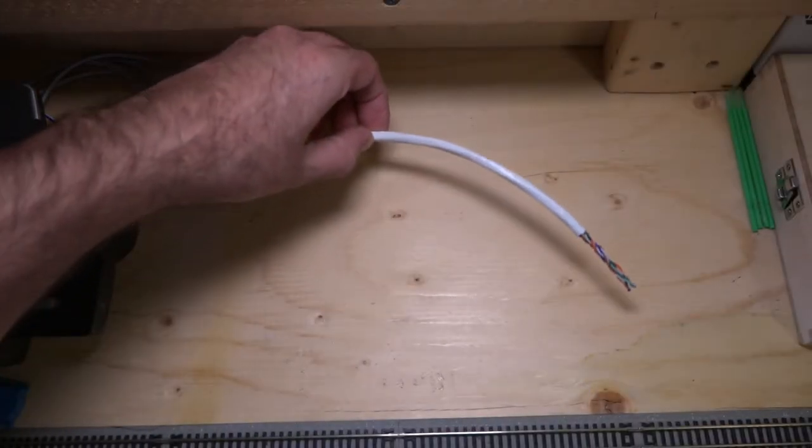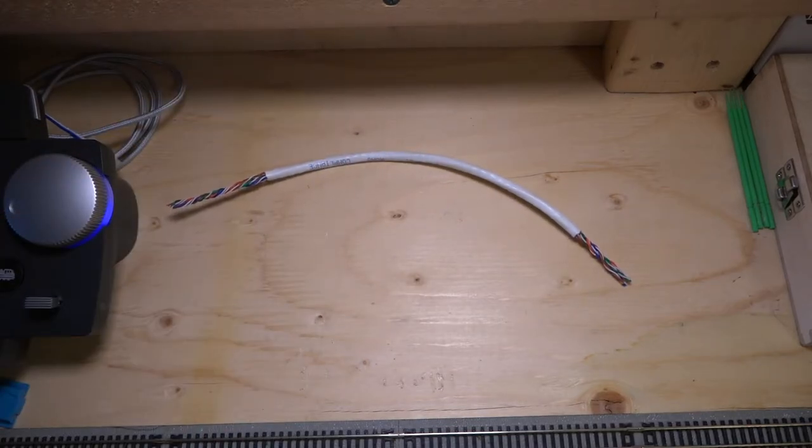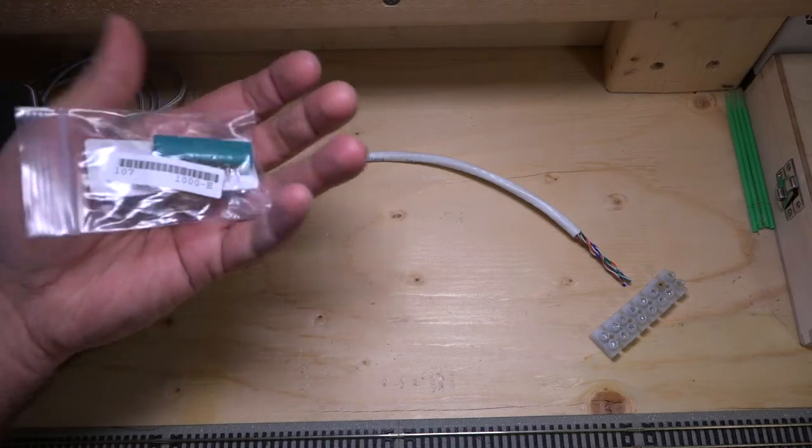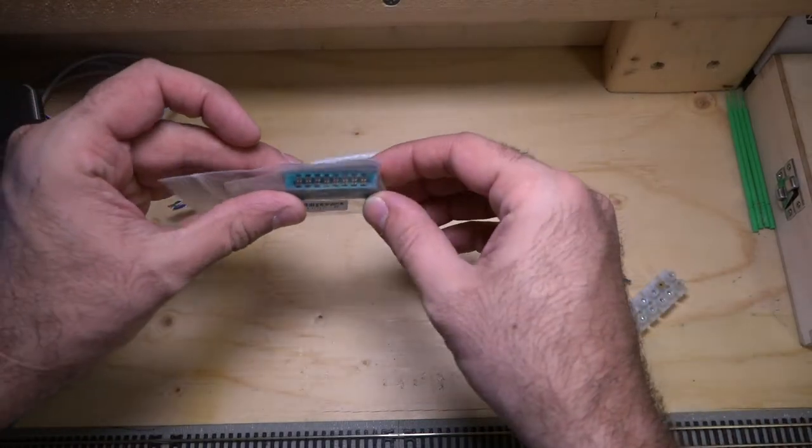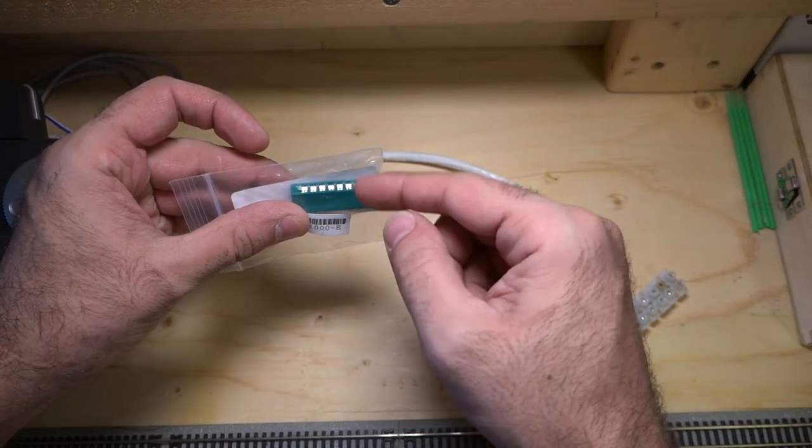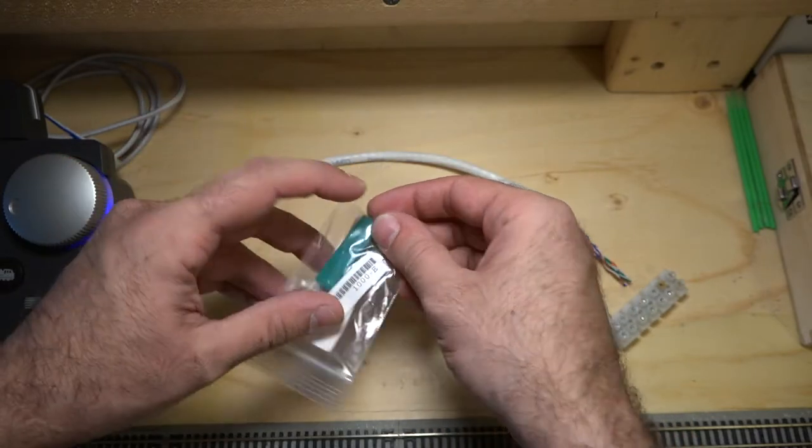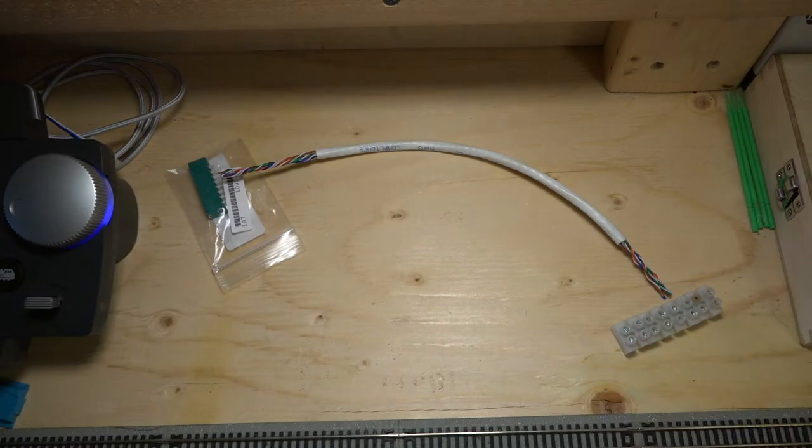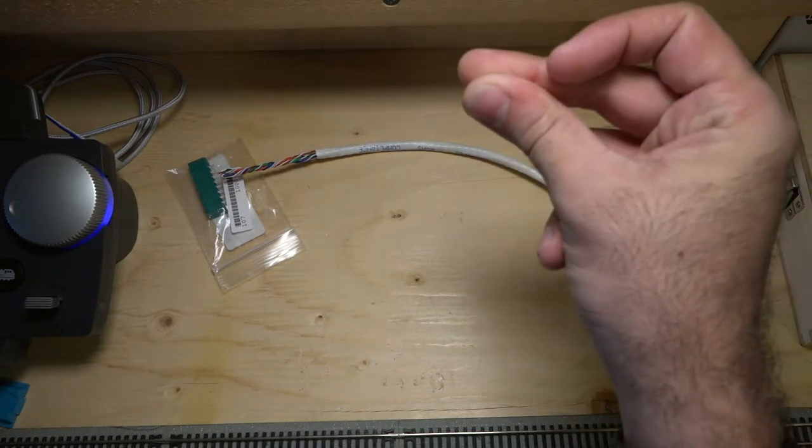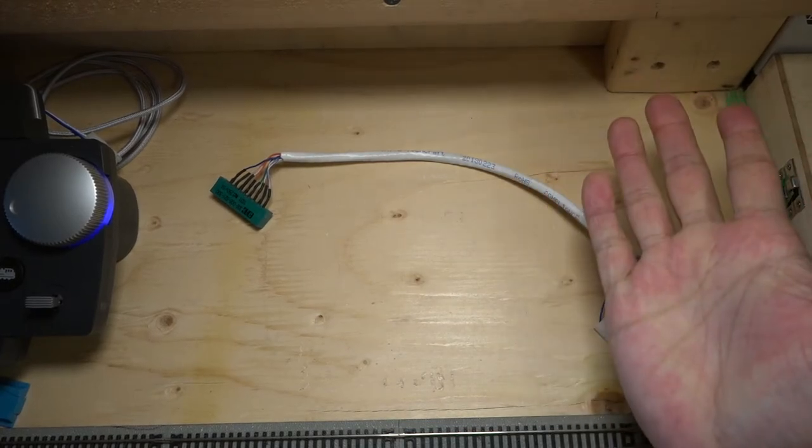I'm going to be using Cat5 cable, barrier strip, and a tortoise edge connector. Basically what this is, is it actually gets plugged into the barrier, into the PCB board on the bottom of the tortoise switch machine. So this is how it's, more or less, it's going to look. And with the magic of video, it's done.